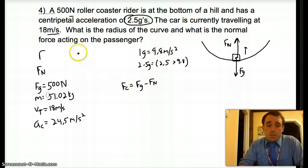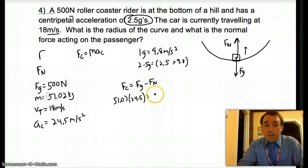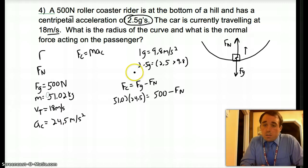But we do, because the centripetal force, just right up here, is mass times centripetal acceleration. And I know the mass is 51.02, and I know the centripetal acceleration is 24.5. So I can do 51.02 times 24.5 equals my FG is 500 newtons minus my normal force.